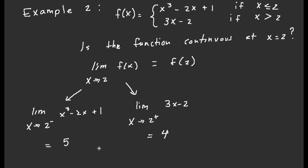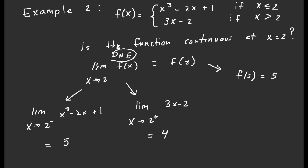This is very interesting because the limit doesn't actually exist as x approaches two, since the left and right hand limits are not equal. Because in order to be continuous, the limit has to exist, the function value has to exist, and they have to be equal to each other. Checking the function value: f of two uses the top function and equals five. However, since the limit does not exist, it can't possibly be equal to five. This function is not continuous — we would call this discontinuous.